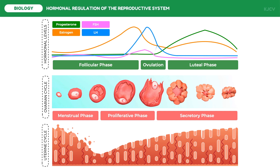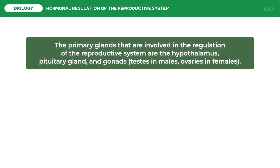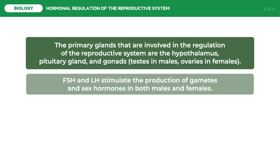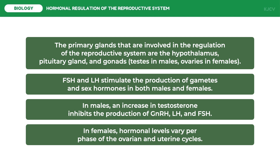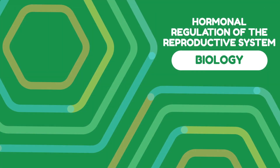To conclude this lesson, the primary glands involved in the regulation of the reproductive system are the hypothalamus, pituitary gland, and gonads — testes in males and ovaries in females. FSH and LH stimulate the production of gametes and sex hormones in both males and females. In males, an increase in testosterone inhibits the production of GnRH, LH, and FSH. In females, hormonal levels vary per phase of the ovarian and uterine cycles. That ends our discussion on the hormonal regulation of the reproductive system.